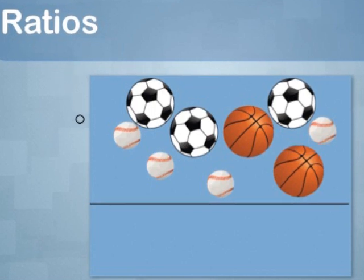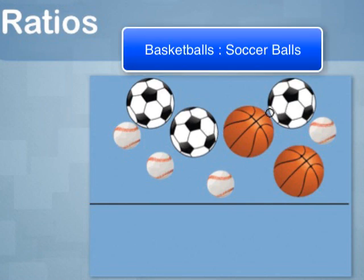Here is a collection of baseballs, basketballs, and soccer balls. There are two basketballs and three soccer balls. So the ratio of basketballs to soccer balls is two to three. And this ratio can be written three ways: two to three, two-thirds as a fraction, or two to three. Each expression is equivalent and each one says that the ratio of basketballs to soccer balls is two to three.